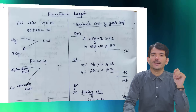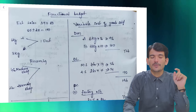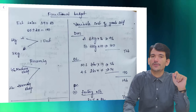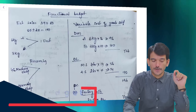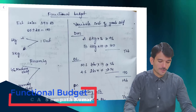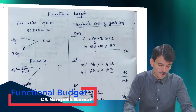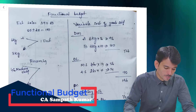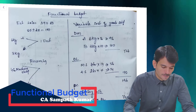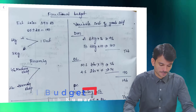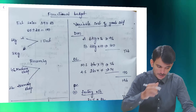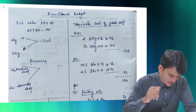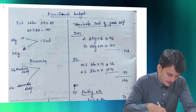Hello friends, we are back again. In this video we are going to solve functional budget problems for CF and L costing from the practice manual. I request you to open the practice manual while I am reading and solving the problems. We are solving problem number 9 - functional budget, page number 4.26 in the old version.